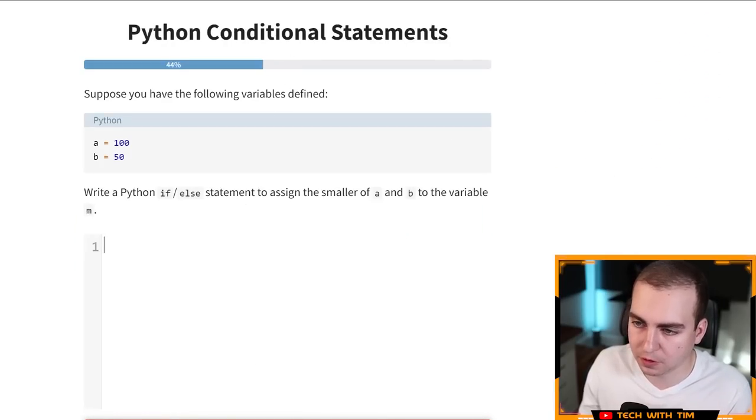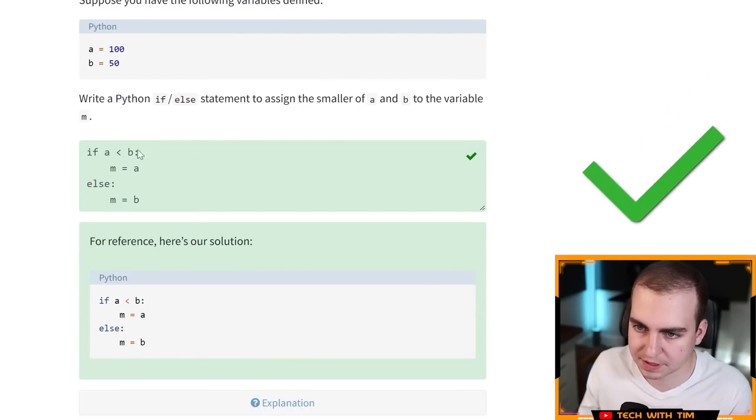Suppose you have the valid or the following variables defined, write a Python if L statement to assign the smaller of a and B to the variable M. Okay. The smaller of a and B, right. And if L statement, I'm a little bit confused here because these are predefined values that asked me to write an if statement, write a Python if L statement to assign the smaller of a and B to the variable M. I mean, could I not just do the min function though? Okay. So I'm going to say if a is less than B, then M is equal to a else M is equal to B. I mean, let's double check this. Sign the smaller of a and B to the variable M. Okay. So a, okay. Yeah. Okay. Good. That was kind of a weird question again.